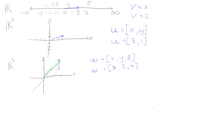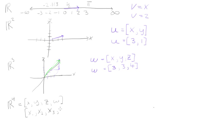In R2 we have two dimensions and two components, and on the real number line we have one component. So the number of dimensions is equal to the number of components required to describe that vector. In linear algebra, we go past three-dimensional space — we can go into R4, which is the set of vectors that have four components. To describe any vector in R4, we could use x, y, z, and a fourth variable — or more cleanly, x1, x2, x3, x4. So here we have four components in four dimensions.